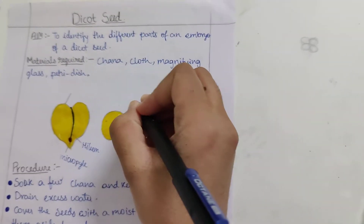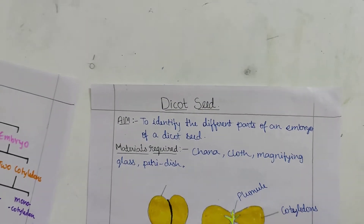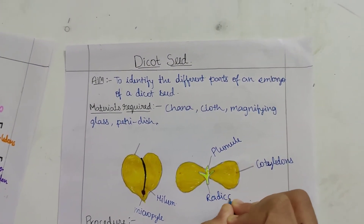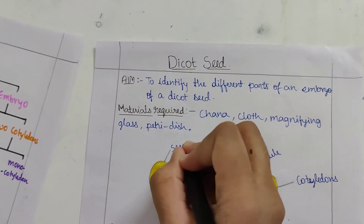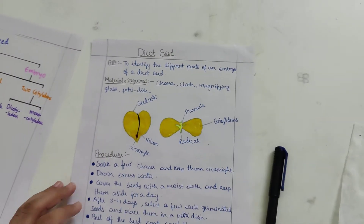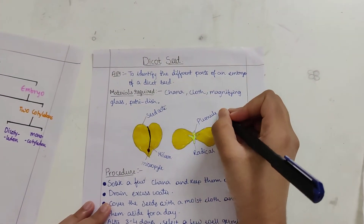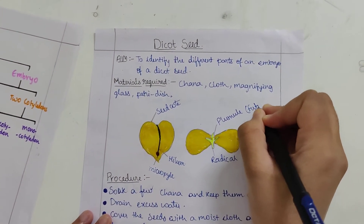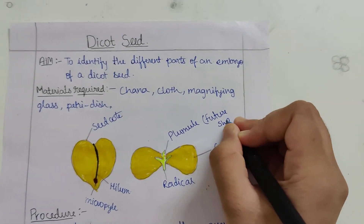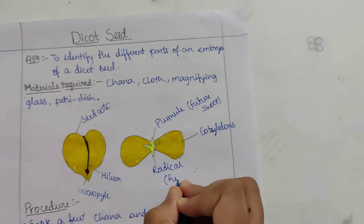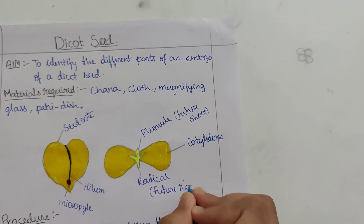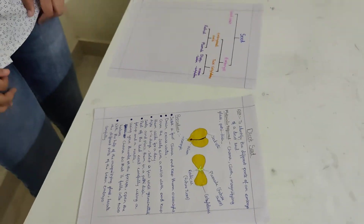This is the plumule. And this is the seed coat. The plumule is the future shoot. And the radicle is the future root.